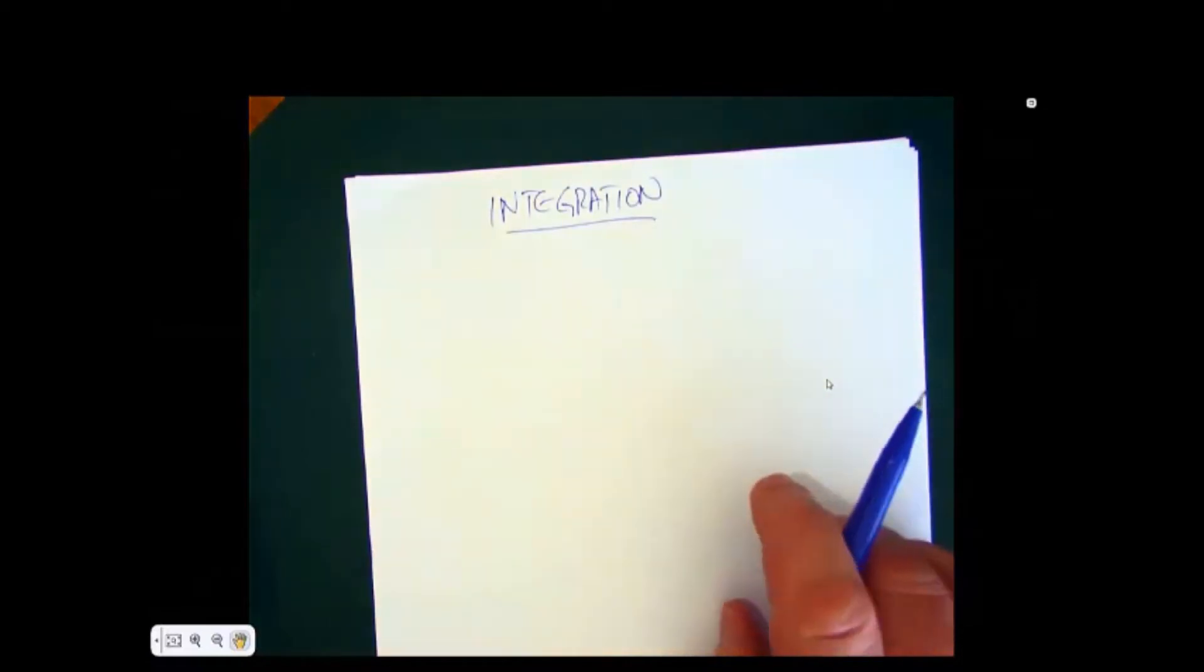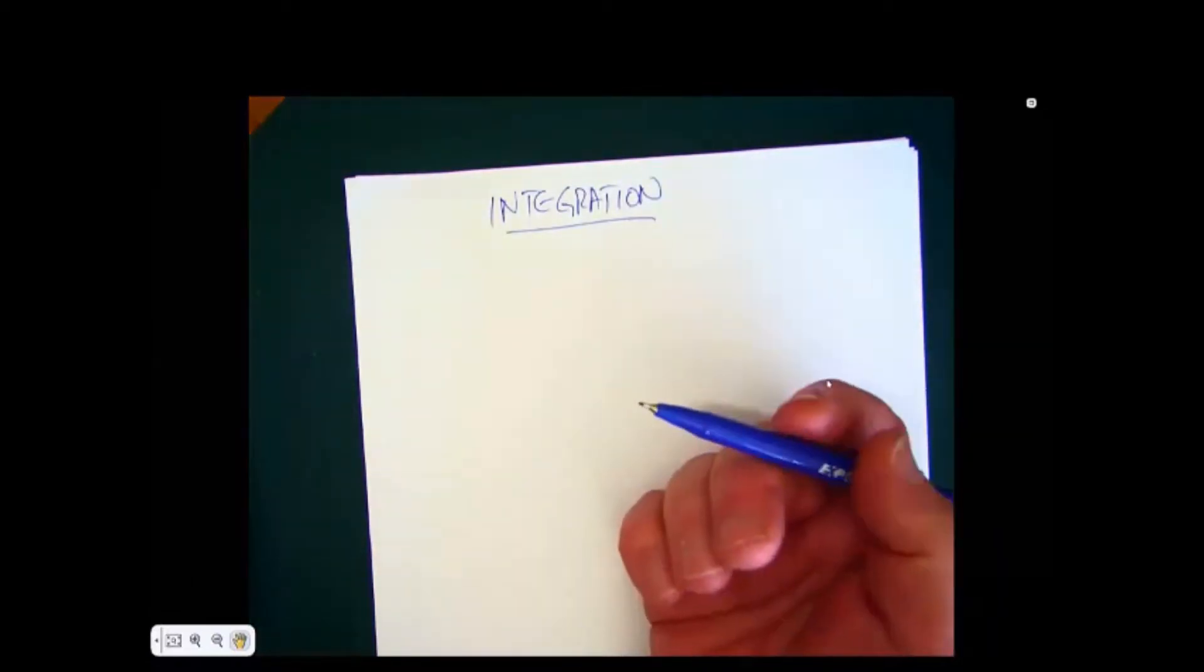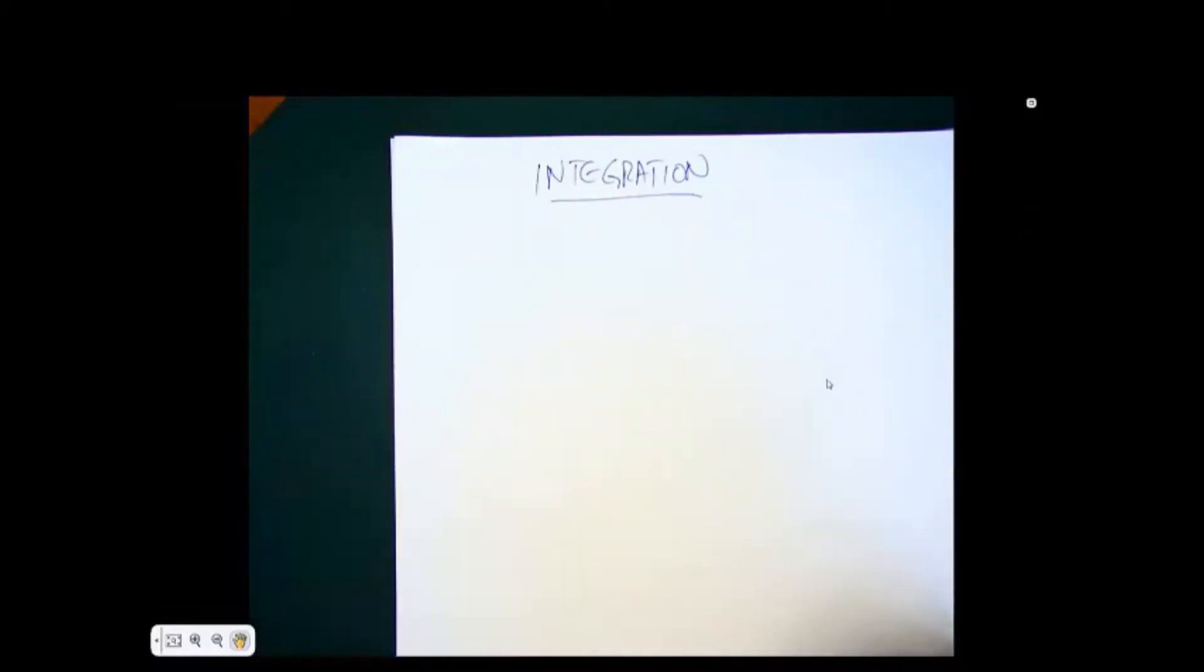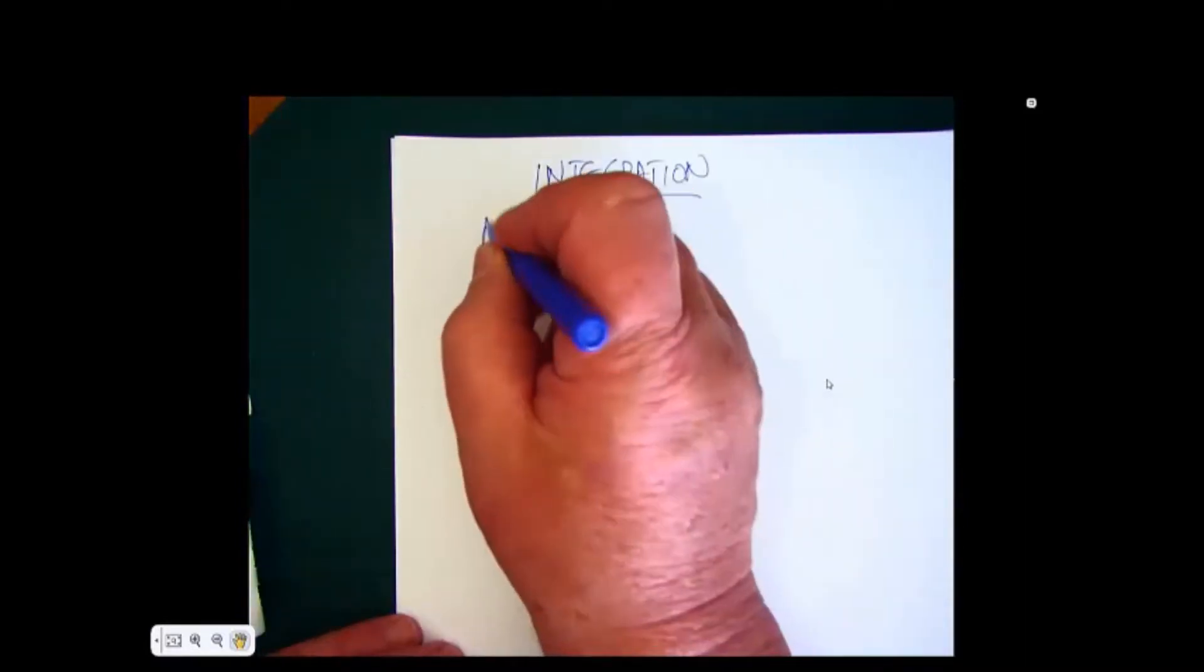Now where we had differentiation, where we were finding the rate of change of one variable with another, integration is really the reverse process. We're going the other way and some people call it anti-differentiation.